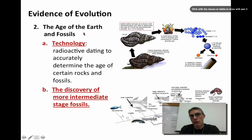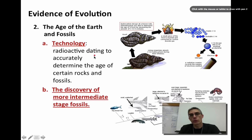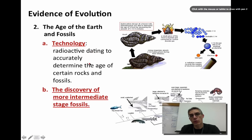The second piece of evidence used to validate whether evolution occurs is the age of the earth and the fossils found on this planet. During Darwin's time, many fossils were found to back up his concept of evolution, but it was really hard to date those fossils. You could see similarities between structures of living organisms and fossils, but showing how they were related was pretty limited. Today we have much more technology that helps us date those fossils more accurately.